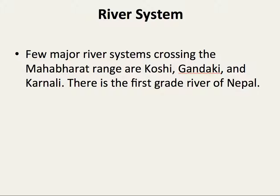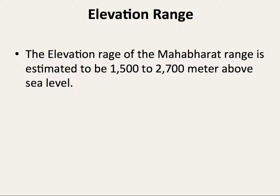River system: Few major river systems crossing the Mahabharath Range are Kosi, Gandaki, and Karnali. These are the first grade rivers of Nepal.